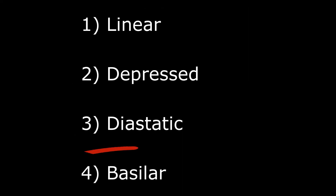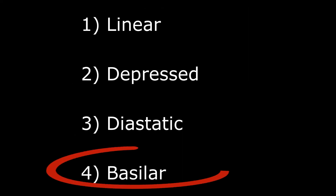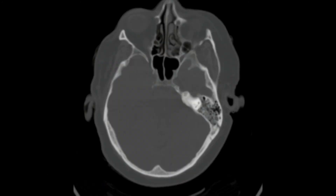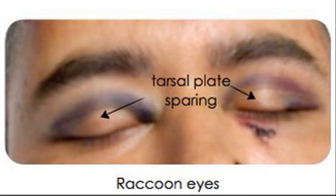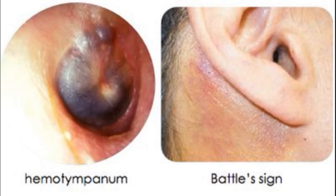And then you have basilar fracture, which is the most serious one and occurs at the base of the skull. Here you can see the axial view — it has led to a bit of hemorrhage. It typically presents with bruises around the eyes, known as raccoon eyes, and bruising behind the ears, known as Battle's sign.